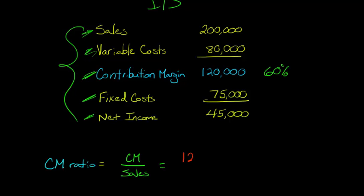So we take that $120,000 contribution margin divided by the $200,000 in sales. That's going to give us 0.6 or, we can also think of that in terms of percentage,